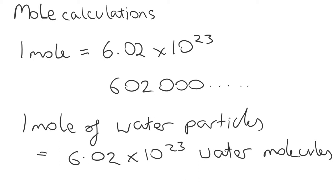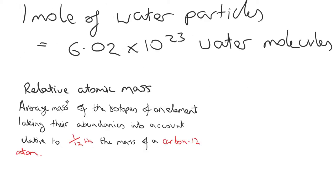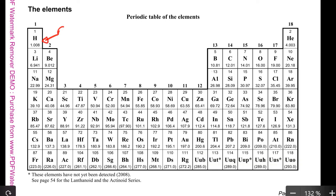There are ways of working out how we calculate a mole of substances. For example, relative atomic mass — which is a definition I looked at in the isotopes video — deals with the average mass of an atom, taking into account all of its isotopes. The definition for relative atomic mass is that it's the average mass of the isotopes of an element, taking their abundances into account, relative to 1/12 the mass of a carbon-12 atom. The atomic mass of hydrogen is 1.008, because there's a tiny number of hydrogen atoms that have an extra neutron, so they're slightly heavier. The relative atomic mass of lithium is 6.941.